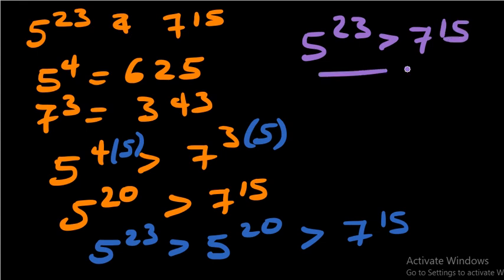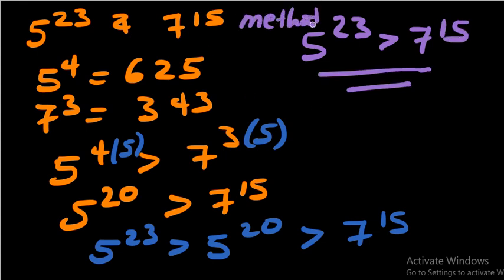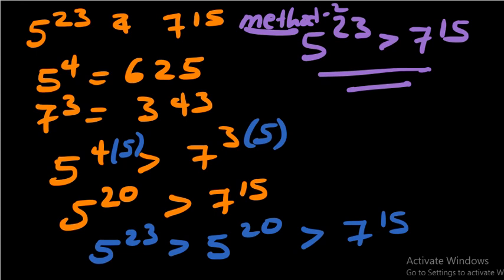Again by transitivity, our conclusion is that five to the power of 23 is greater than seven to the power of 15. So these are the two methods to compare two numbers which are in exponential form. Thank you for watching — don't forget to comment and like.